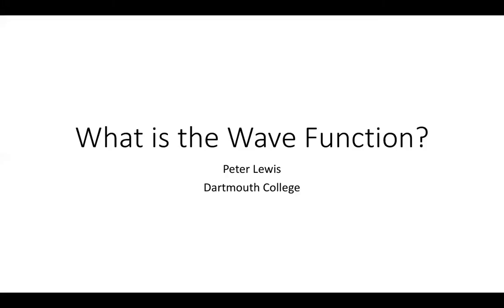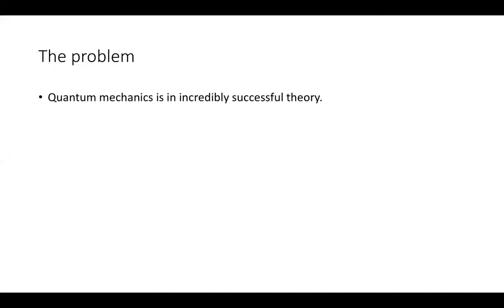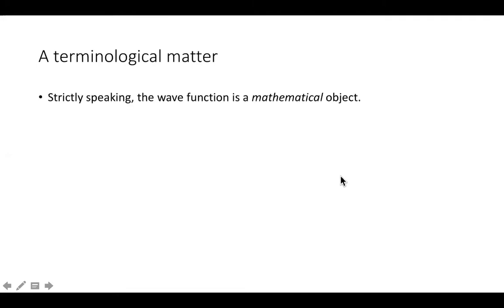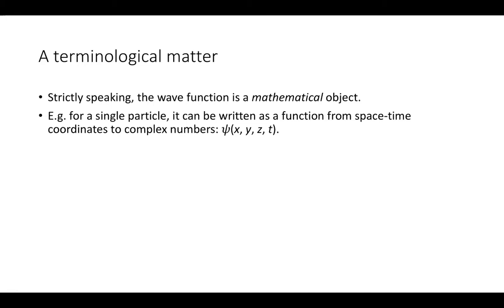Thanks for inviting me, thanks for coming everyone. I want to talk about the wave function today. The basic problem is the obvious and familiar one: quantum mechanics is an incredibly successful theory, but we don't know how to interpret it — in some sense that's obviously contested. One way of stating this difficulty is that quantum mechanics is written in terms of the quantum state or wave function psi, but we don't know what psi represents. In one sense of course we do know what psi represents — strictly speaking, the wave function is a mathematical object, a function from space-time coordinates to complex numbers.